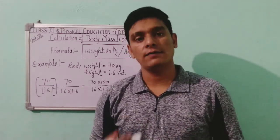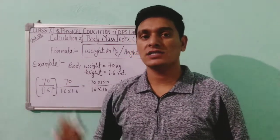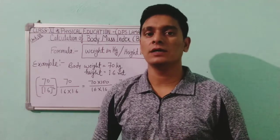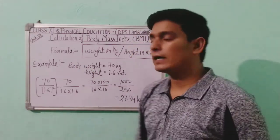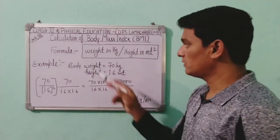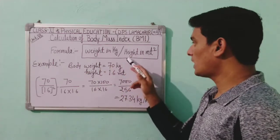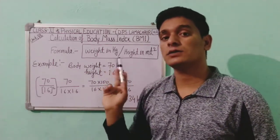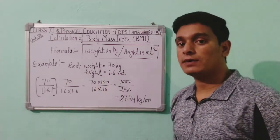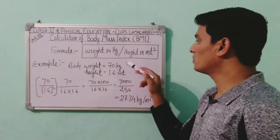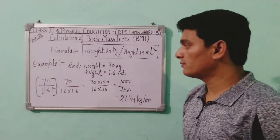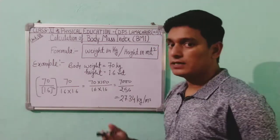Now let me tell you the formula for BMI, and I will also give you an example so you will be able to understand how to calculate the BMI. The formula for BMI is: weight in kg divided by height in meters squared. This question can be asked in very short or short answer type questions — what is the formula for BMI? The answer is weight in kg upon height in meter square.